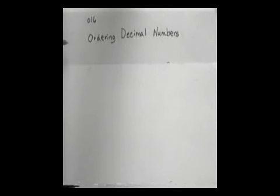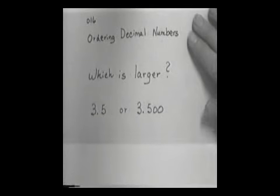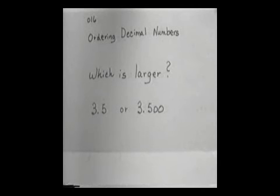The next thing we'd like to do is to order some decimal numbers. We'd like to decide which of two decimal numbers is larger. Which is larger? 3.5 or 3.500? Now, this is a place where you have to be mighty careful. Many times students will look and just because they see three digits over here, they'll automatically assume that the second one is larger. But let's examine what these numbers really mean.